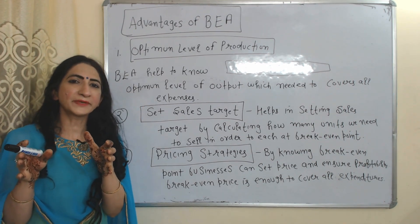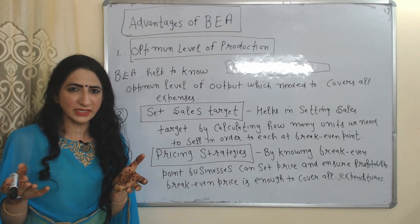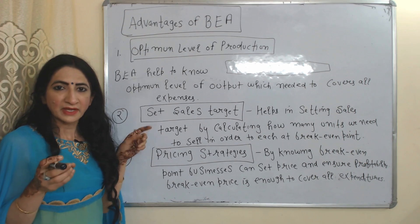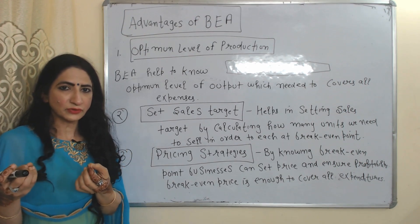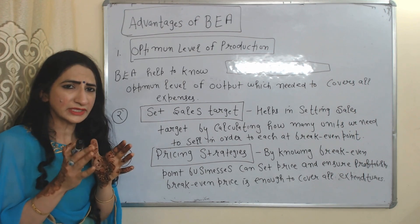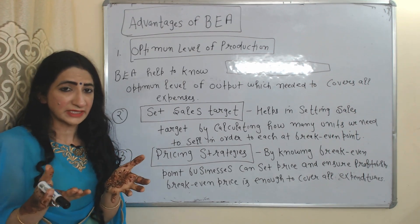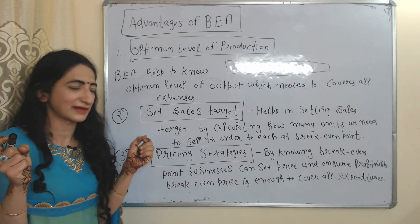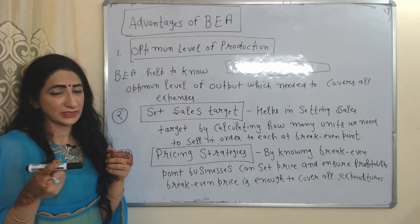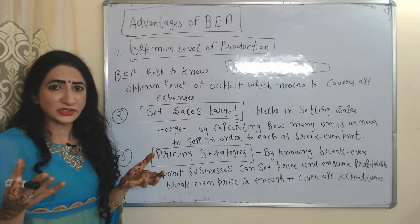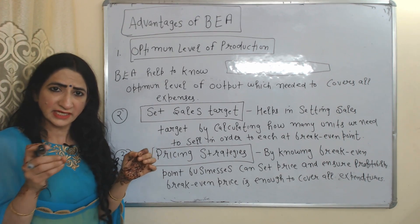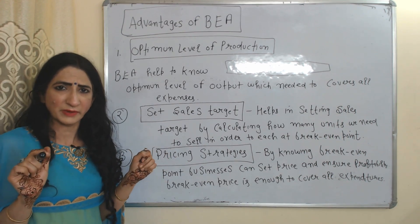The second advantage is setting a sales target — breakeven analysis helps to know how much quantity we need to sell in order to reach the breakeven point, which helps in setting a sales target. The third advantage is pricing strategy — by knowing the breakeven point, we can easily set the price of our product which ensures profit, as the breakeven price is enough to recover all expenditures.